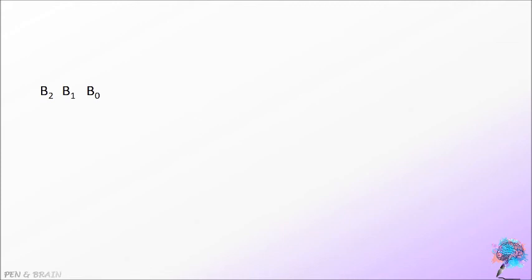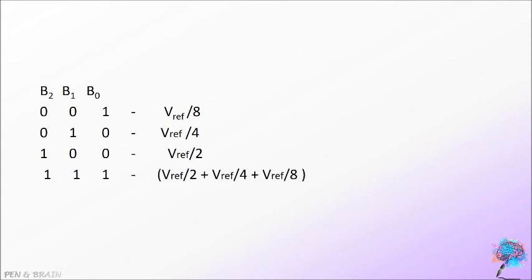Now, let us find out the value of Thevenin's voltage for different values of B0, B1 and B2. We have already found out the value for Thevenin's voltage for 1, 0, 0 case that is V reference by 8. For 0, 1, 0 it is V reference by 4 and 1, 0, 0 it is V reference by 2. For 1, 1, 1 using the superposition principle we can just sum up all that is V reference by 2 plus V reference by 4 plus V reference by 8.